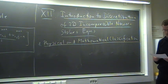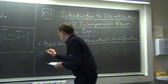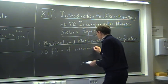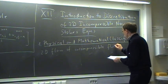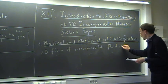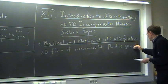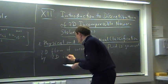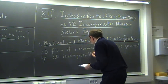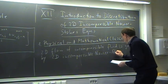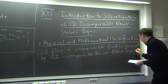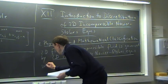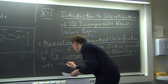We start as usual with a physical and mathematical classification. Here I can refer to the fluid mechanics course — TP4100, 4110, or 4105 — which are essentially very similar. What we describe here is two-dimensional flow of an incompressible fluid, governed by the 2D incompressible Navier-Stokes equations with constant viscosity. That is 2D flow of an incompressible fluid, where we simply assume that density is constant.